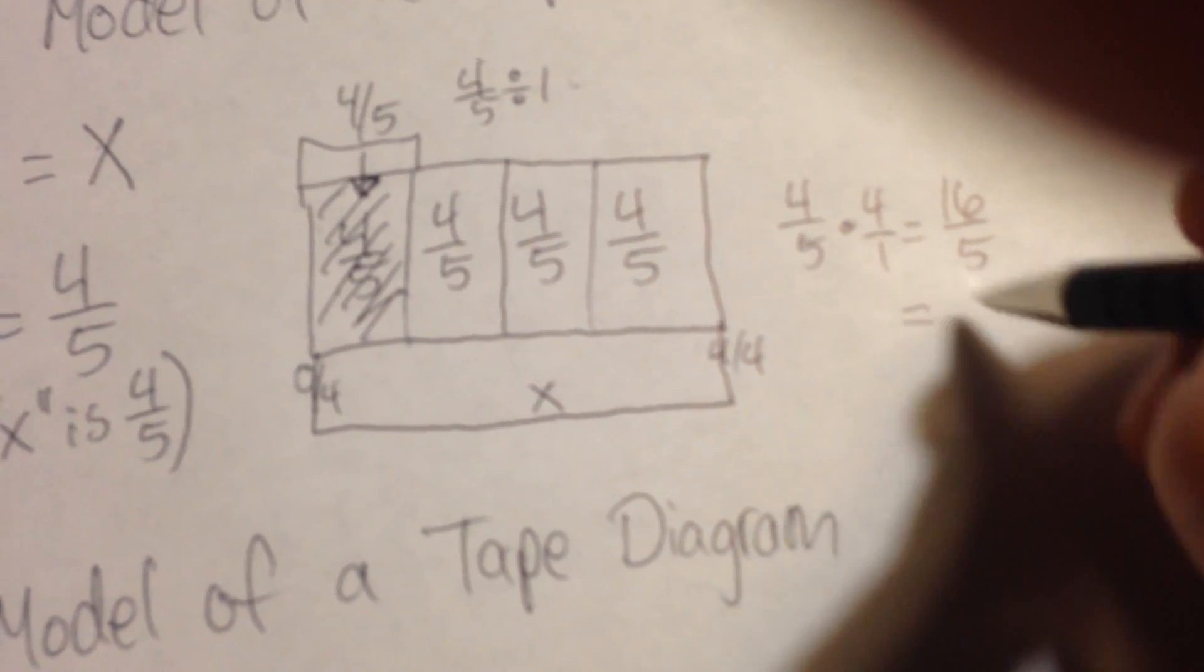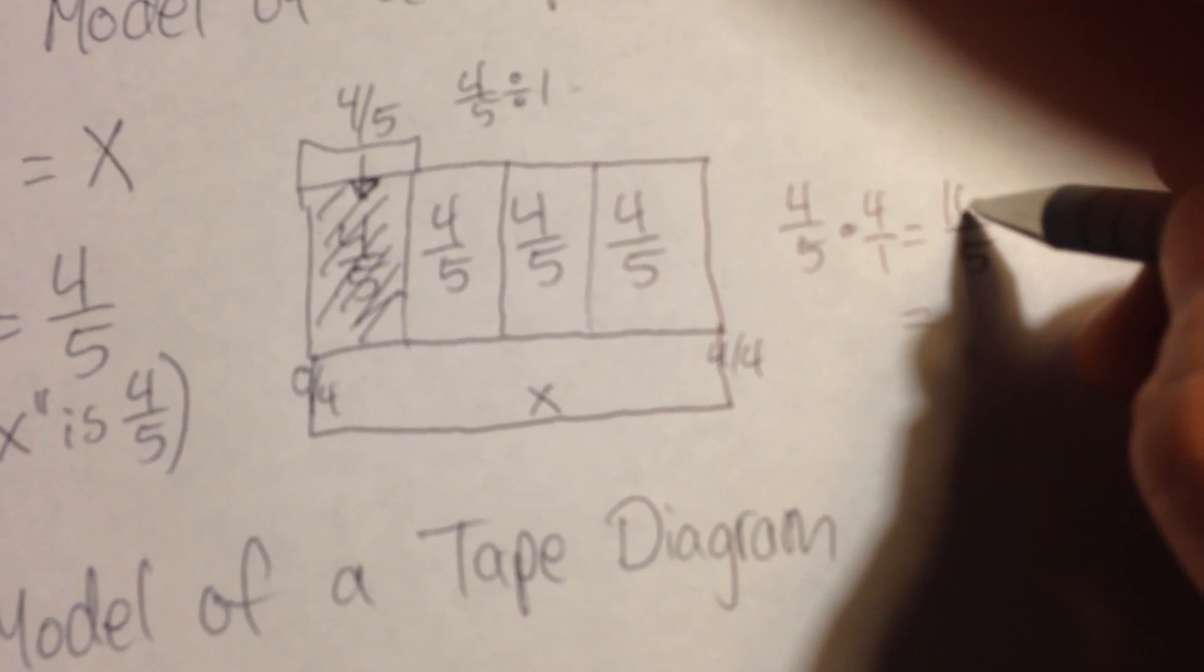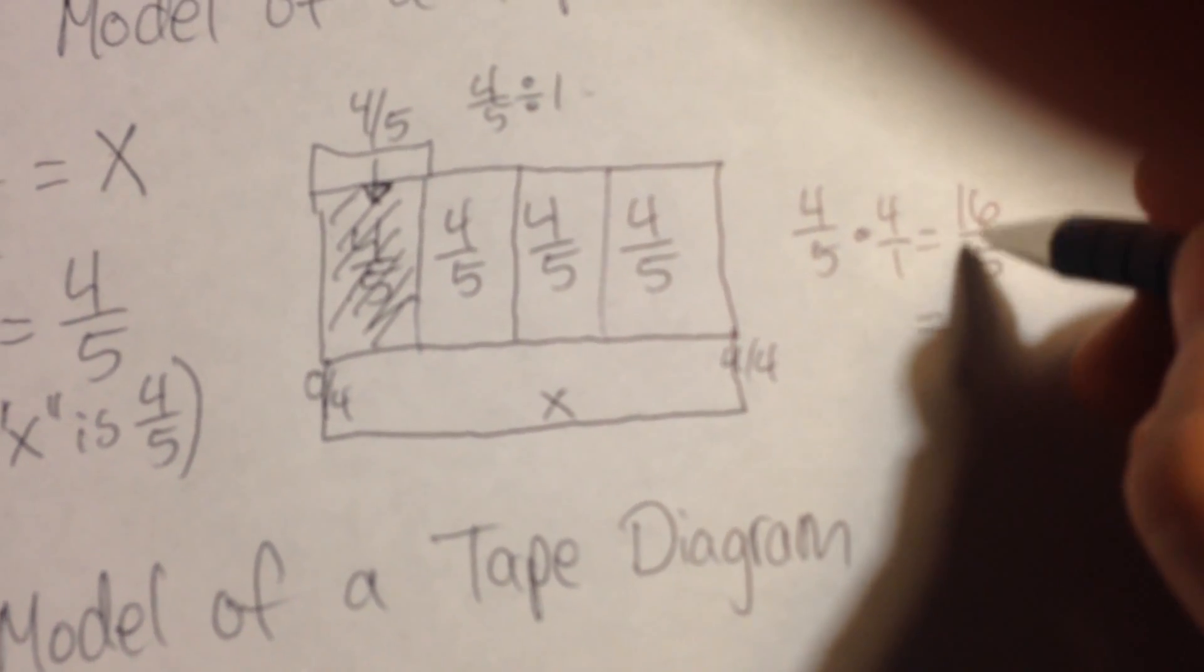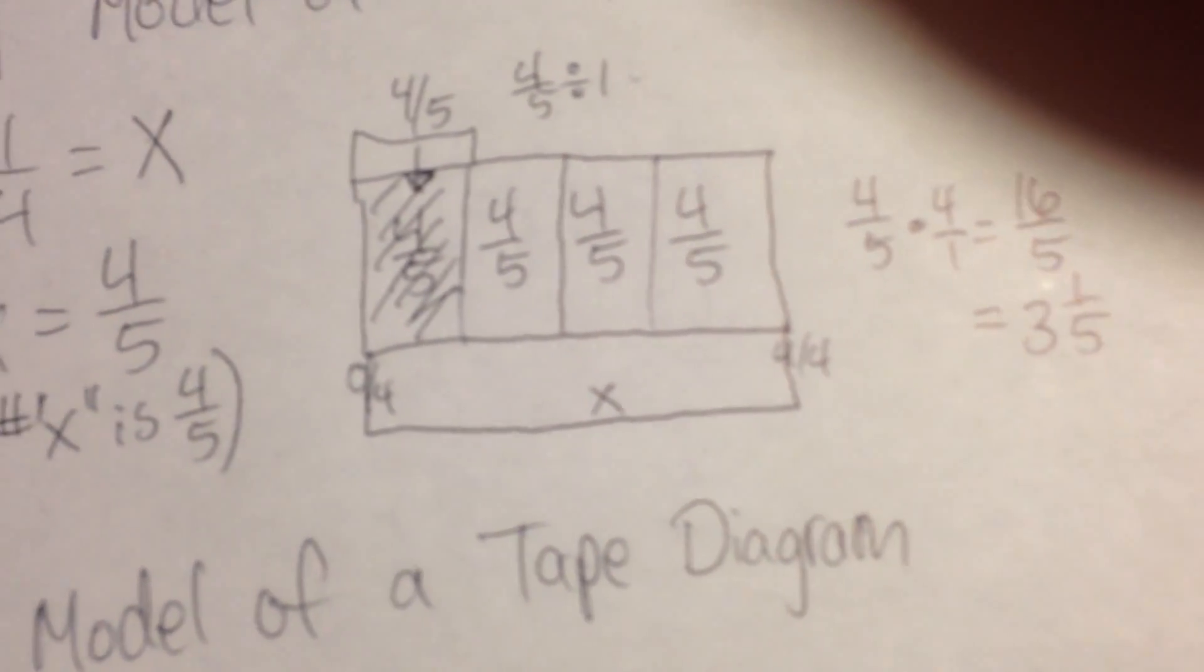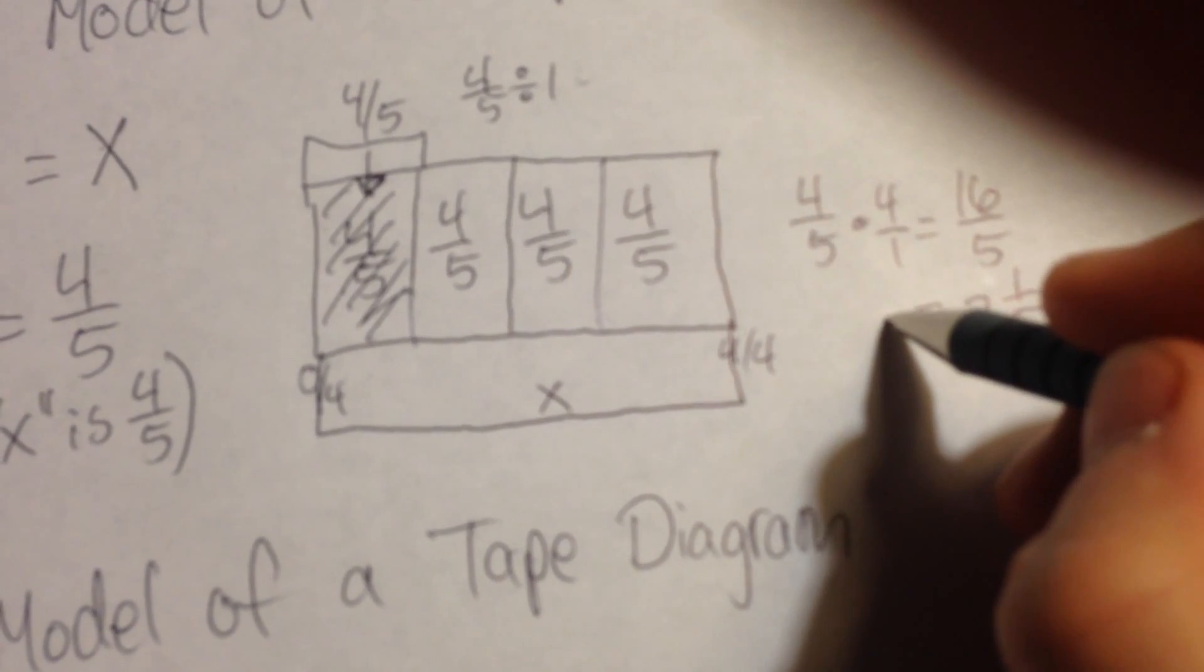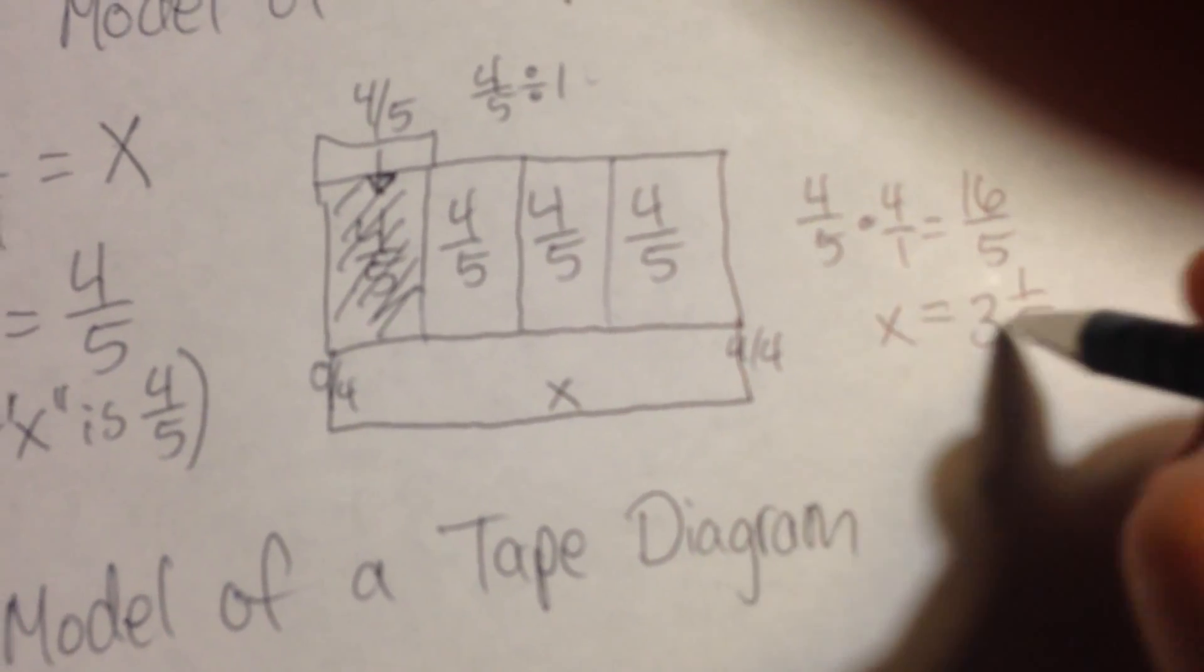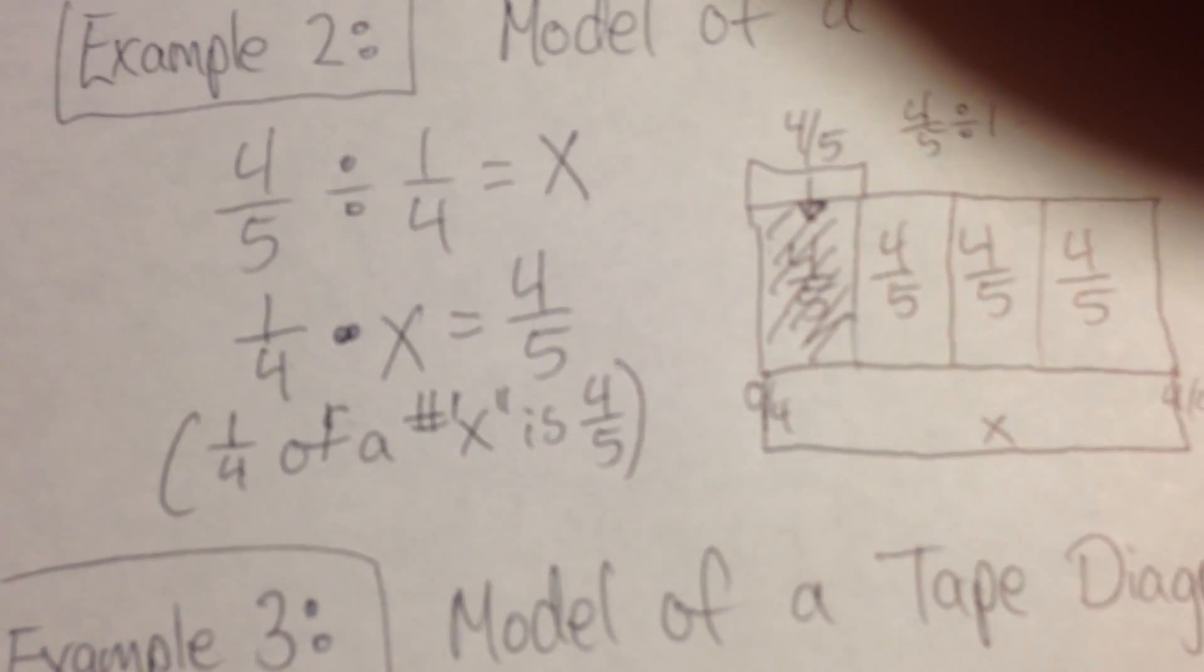I can put this into simplest form. I have three groups of five in sixteen. So sixteen divided by five is going to give me three and one-fifth. Now this time, and that's what x equals. x equals three and one-fifth. This time I chose just to jump right in and draw my model.